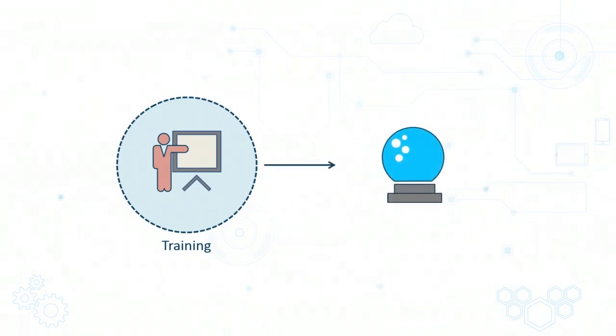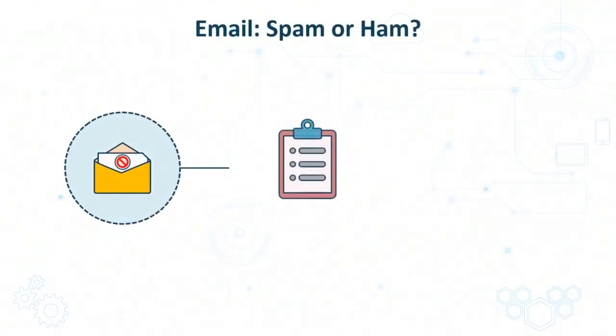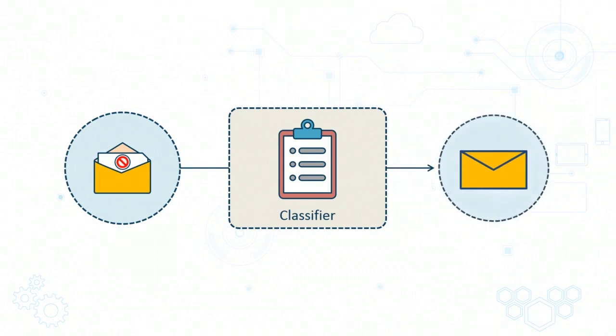Once the training phase is complete, the model is now ready to make predictions on new data. When it is fed in a new email which has not already been classified, it will look for the patterns it has learned during the training phase and then decide whether that email represents spam or is a legitimate email.